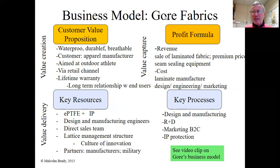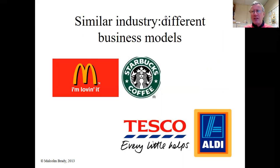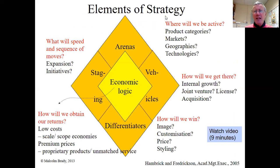That's what I'll say about the business model concept. I'm going to move to a second concept — Hambrick and Frederickson's strategy diamond model — which is very similar to the business model and has an alternative use. Different companies working in the same industry with the same generic strategy — for example, low-cost retailers like Aldi and Tesco — can have very different business models when you look at them in detail. The strategy diamond covers very similar ground to the business model but adds a few extra dimensions.